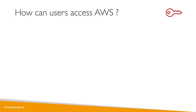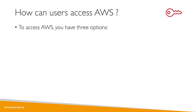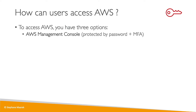We have seen how to access AWS using the Management Console, which is the web interface we've used so far in this course, but there are actually three different options to access AWS. The first one is the Management Console, and it's protected by your username and password, maybe multi-factor authentication.